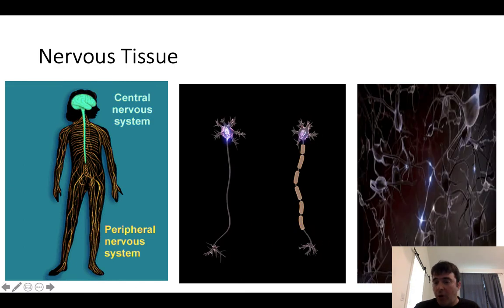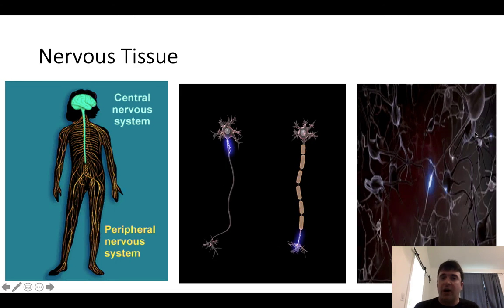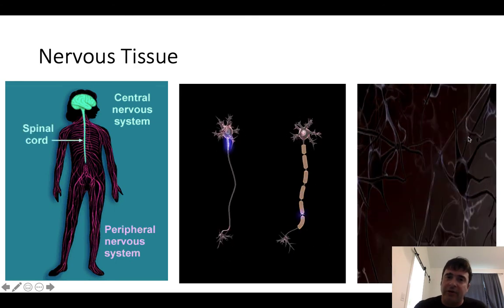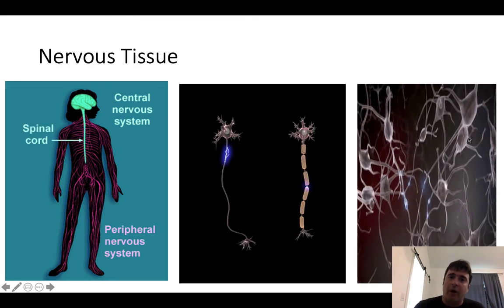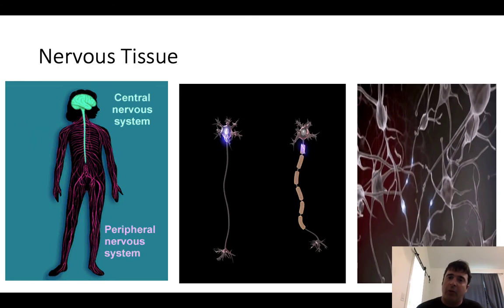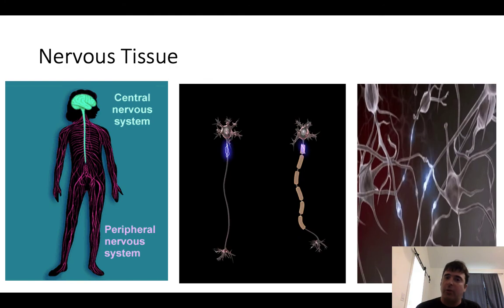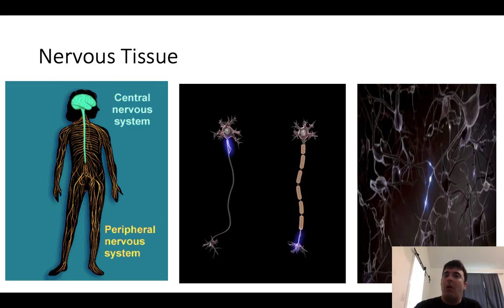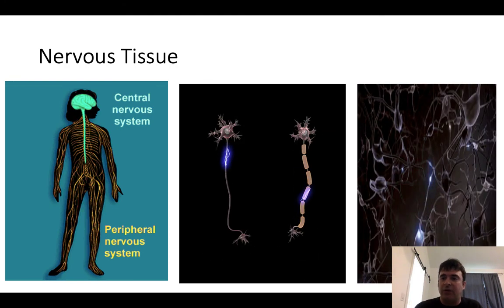Neurons are big cells — you can have a neuron that extends all the way from the bottom of your spinal cord to the tip of your toe, meaning you can have a meter-long cell.